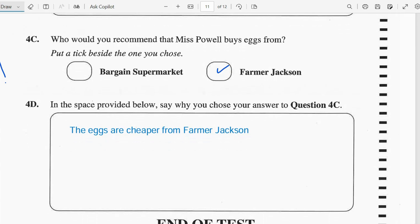And we could just say that $5,000 is the cost for the eggs from Bargain Supermarket. And if Farmer Jackson has the eggs for $4,800, then that means Ms. Powell would be saving $200 when she makes her baked products.